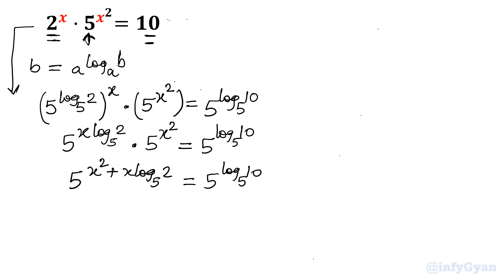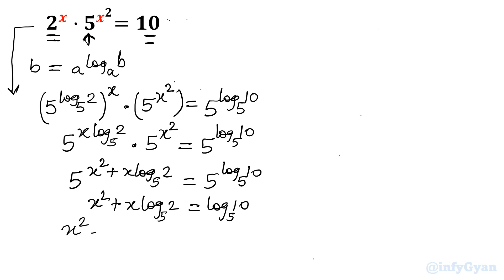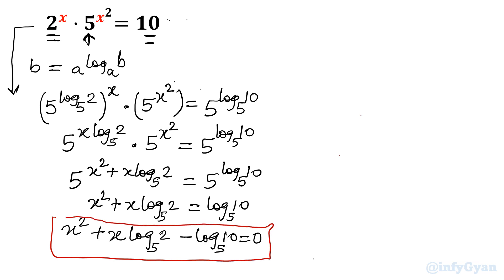Because both sides now have the same base 5, the exponents must be equal to each other. So x squared plus x log base 5 of 2 is equal to log base 5 of 10. Taking all terms to the left side: x squared plus x log base 5 of 2 minus log base 5 of 10 equals 0. This is our quadratic equation, derived using base conversion.